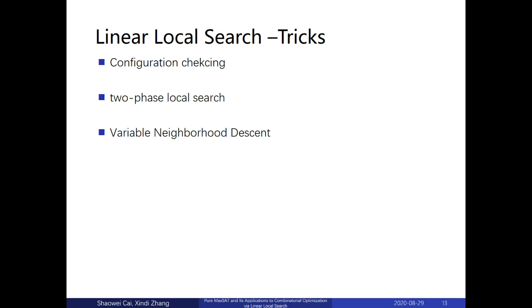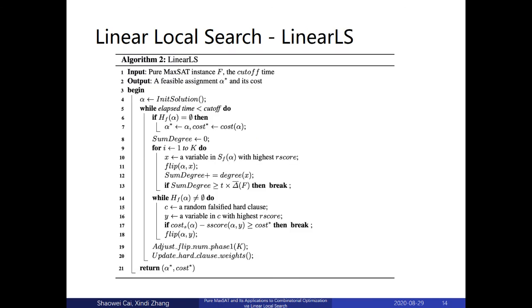Besides this, we also have some techniques in our local search, including configuration tracking, which attempts to handle the cycling issue in local search, and also variable neighborhood descent. This is also a common technique in local search. Now, this is a full description of our algorithm. Basically, this is a two-phase local search. In the first phase, we pick some variables to decrease the soft cost. And then in the second phase, we try to satisfy hard clauses but to keep the cost as small as possible and no greater than the cost star. We also have some dynamic ideas to change the parameter, but we will not have time to explain this in this talk. Anyone interested in these details can refer to our paper.